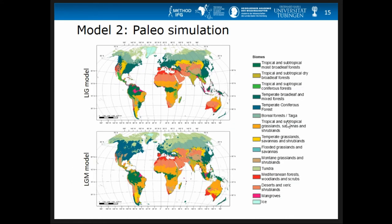Here we have the paleo simulation: this is the Last Interglacial model and this is the Last Glacial Maximum model. Briefly, you can see tundra vegetation moving south into central Europe. Ice is not included in this model, so there are still patches of coniferous forest. All the bioclimatic zones are shifting southward — you can see the boreal forest and taiga moving to the south, and generally this southward shift of all zones.